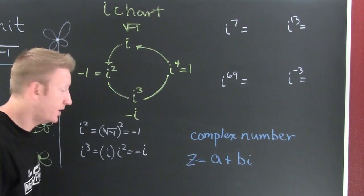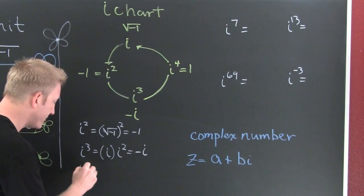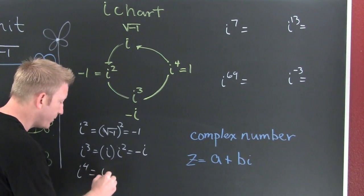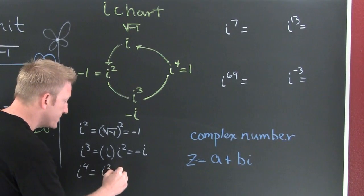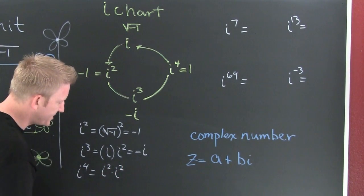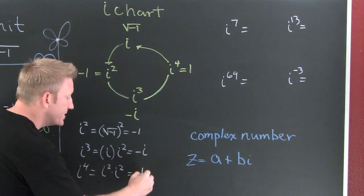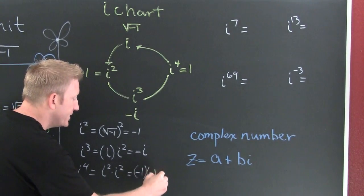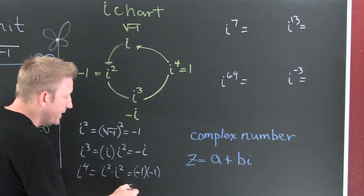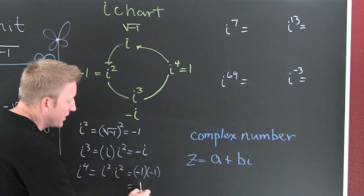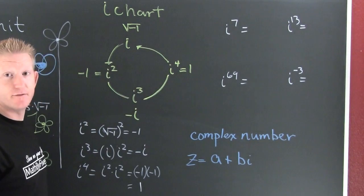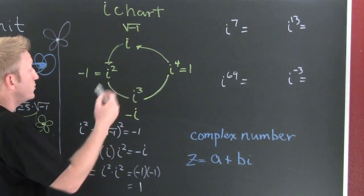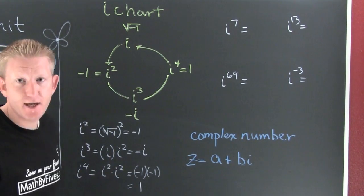What about i to the fourth? Well, that thing's gonna break up as i squared times i squared, which is going to get you a minus 1 times a minus 1. That's gonna totally yield you 1, and that's how we get i to the fourth.